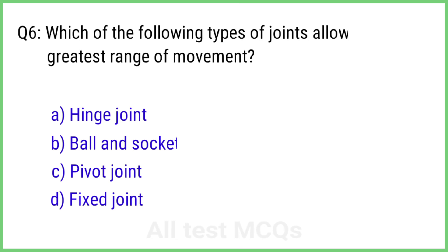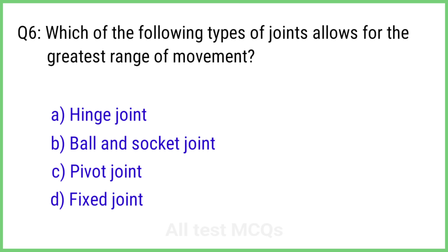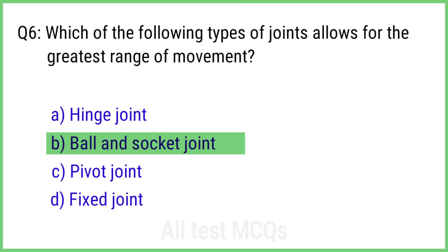Question 6. Which of the following types of joint allows for the greatest range of movement? The correct answer is option B: Ball and socket joint.